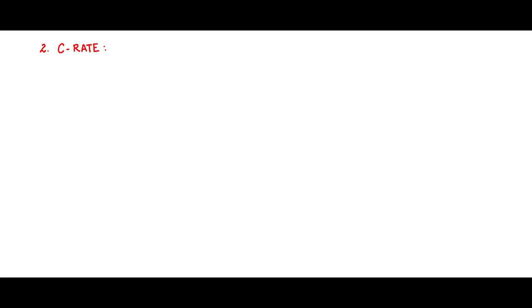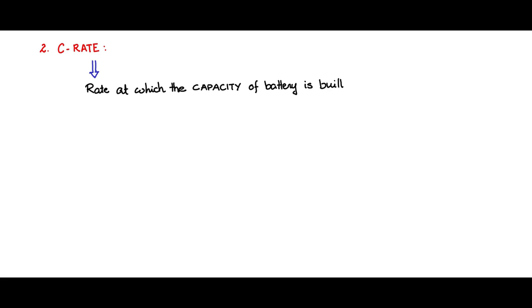Another important parameter of the battery is the C-rate. What is C-rate? The rate at which the capacity of a battery is built up — filled up, what we call charging — or given up, discharged to the load, is called the C-rate of the battery.